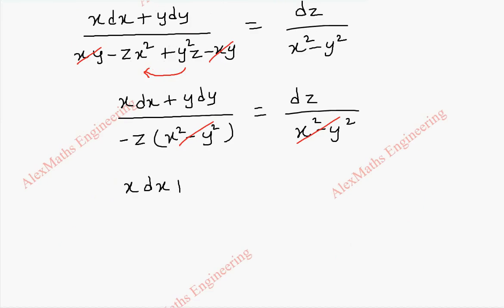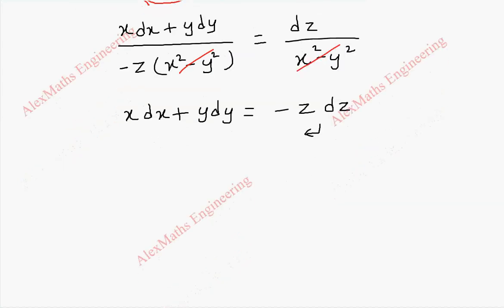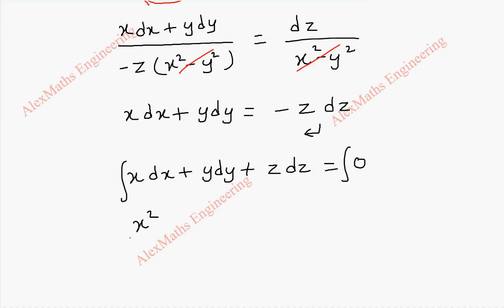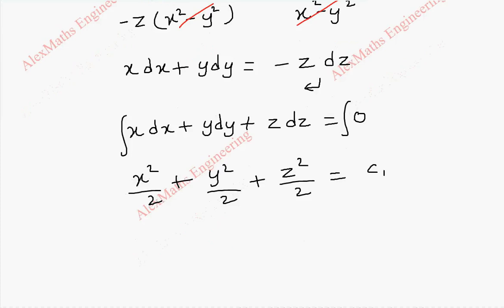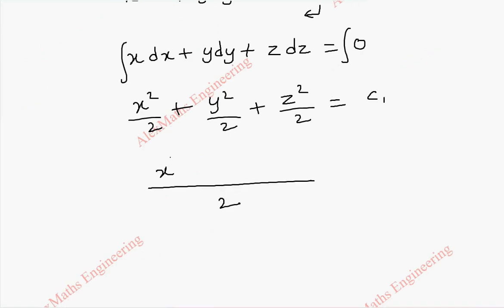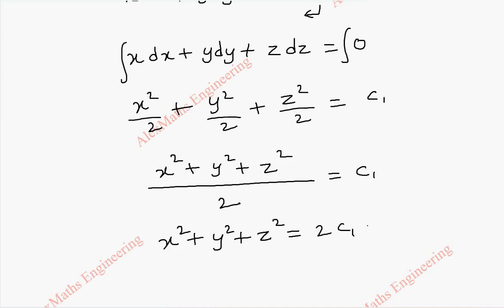After cross multiplication, we get x dx plus y dy equal to minus z dz. Taking this to the other side, it is x dx plus y dy plus z dz equal to 0. On integration we get x square by 2 plus y square by 2 plus z square by 2 equal to a constant c1. Taking LCM, numerator is x square plus y square plus z square equal to 2c1. We shall name this as constant a.